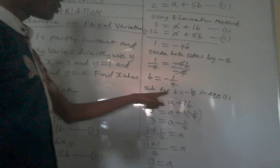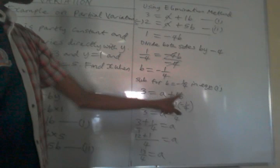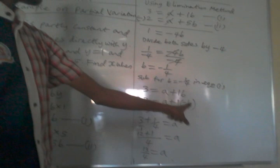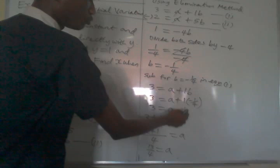Then we substitute for b which is equal to minus 1 over 4 in any of the two equations. We pick equation 1. Then we have 3 is equal to a plus 1b. 3 is equal to a plus 1, open bracket, our b is minus 1 over 4. Then we work it out.